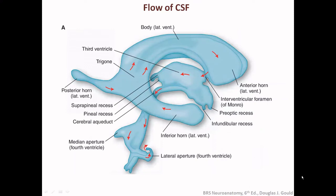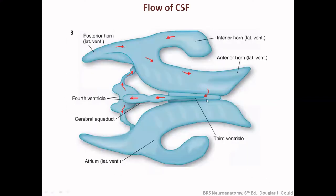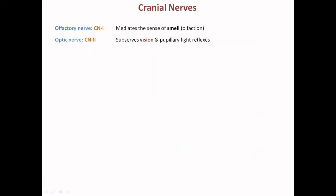Looking at the diagram more clearly: the choroid plexuses in the lateral ventricles generate CSF. From the lateral ventricles it moves to the third ventricle, then to the fourth ventricle, then to the subarachnoid space, then through the superior sagittal sinus, and finally to the venous blood. In the dorsal view, we can see the two lateral ventricles, the third ventricle, the fourth ventricle, then the subarachnoid space, the sagittal sinus, and finally the venous node.